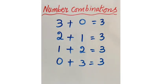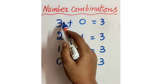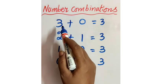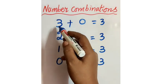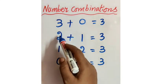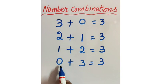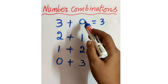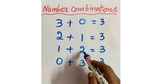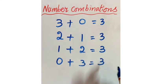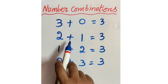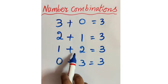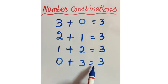It is very easy. So write the before numbers first: for combinations of 3, write 3, then 2, 1, 0 going down. Then write the after numbers: 0, 1, 2, 3. These are the combinations of 3: 3 plus 0 equals 3, 2 plus 1 equals 3, 1 plus 2 equals 3, 0 plus 3 equals 3. Is it clear, children? Is it easy? Yes, let's enjoy.